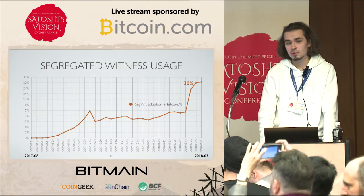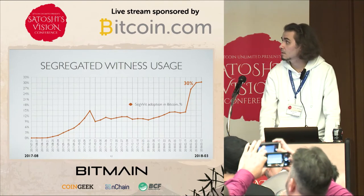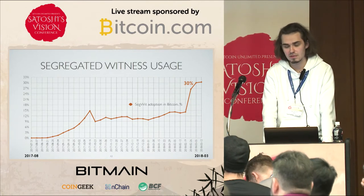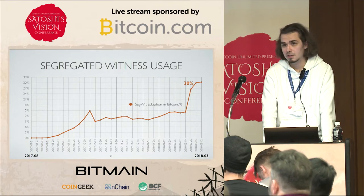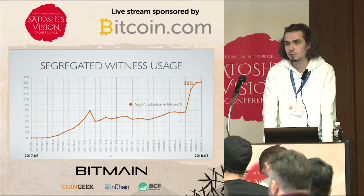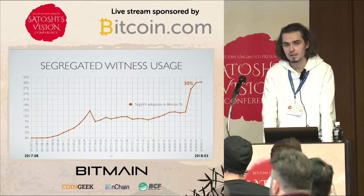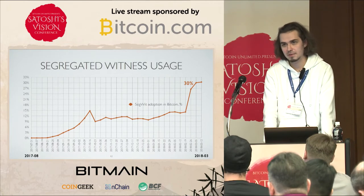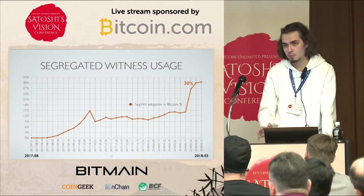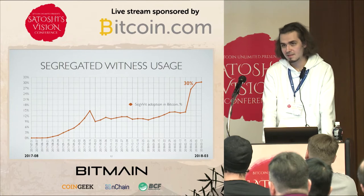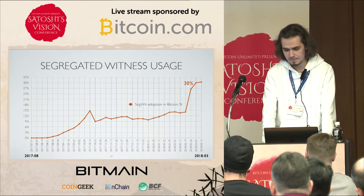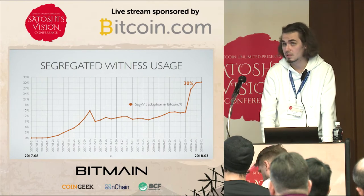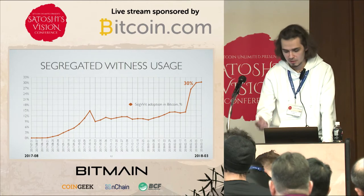Let's get back to segregated witness for a moment. Here we can see the adoption rate chart for SegWit in Bitcoin — right now the adoption is nearly 30%. And here we can see the difference between a soft-forking approach to changes and hard-forking. SegWit has been in Bitcoin for over half a year and if SegWit were implemented as a hard fork it would instantly have 100% adoption. This is why Bitcoin Cash is better than Bitcoin — changes are implemented quicker.